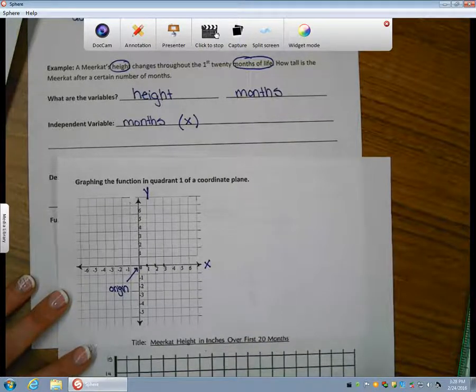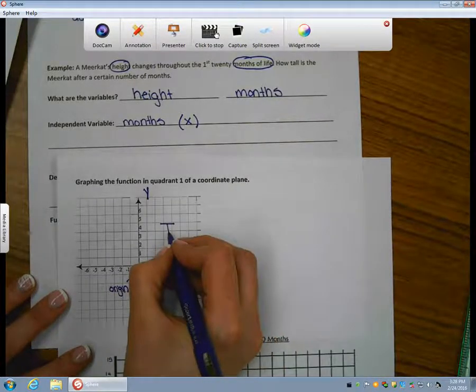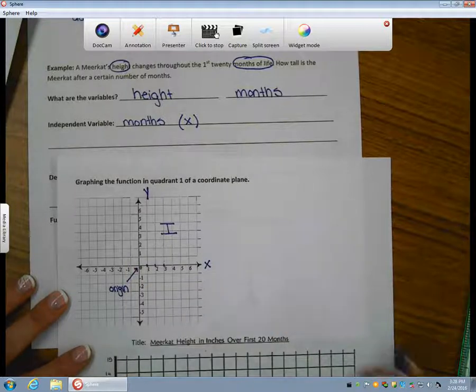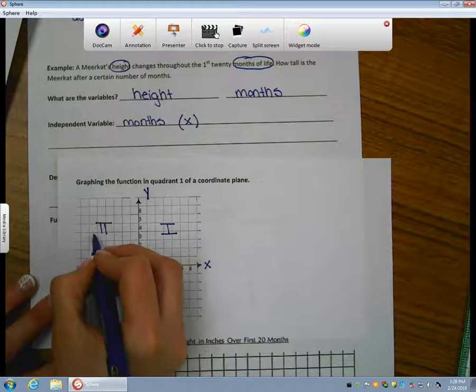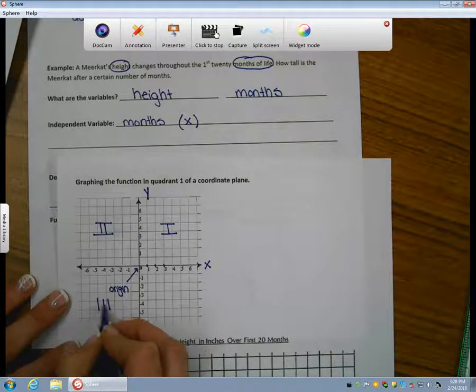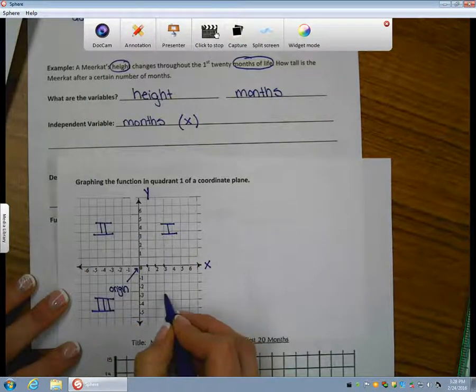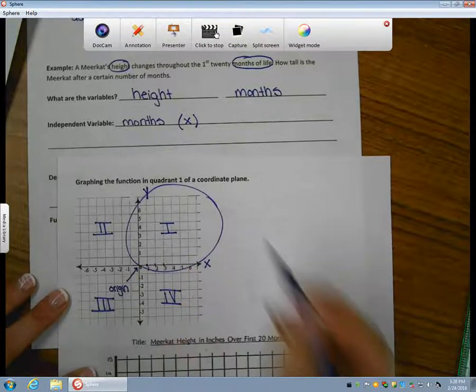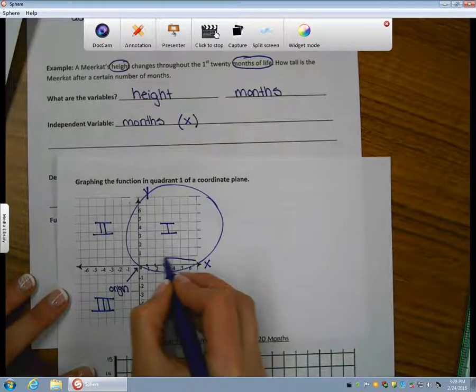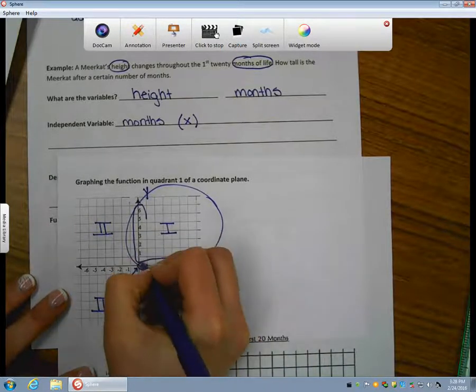Today, we're working with quadrant one. This is quadrant one of our coordinate plane. There are three quadrants in all. Quadrant one, quadrant two, quadrant three, and quadrant four. Again, today, we're going to be working with quadrant one, where all of our x values are positive, and all of our y values are positive.